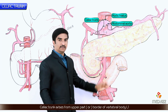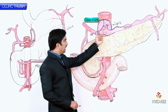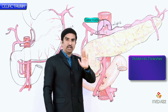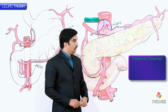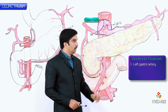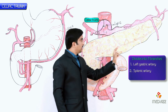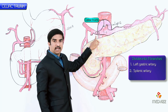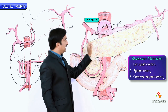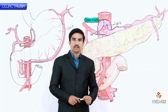Immediately after its origin, the celiac trunk divides into three branches: the shortest is called the left gastric artery, the largest is called the splenic artery, and the medium-sized one is called the common hepatic artery. These are the three important branches of the celiac trunk.